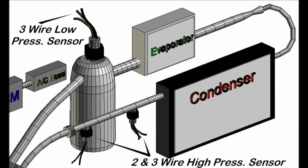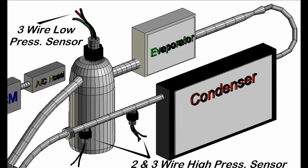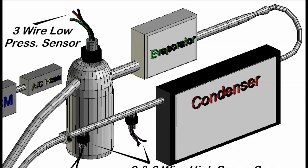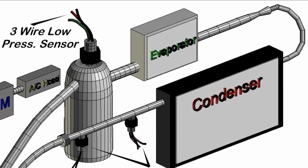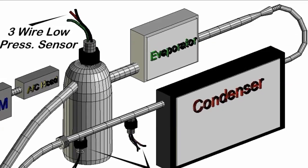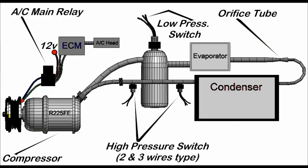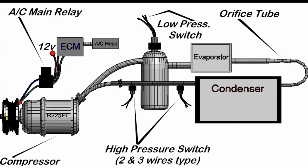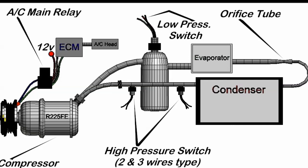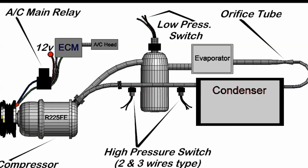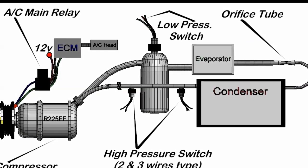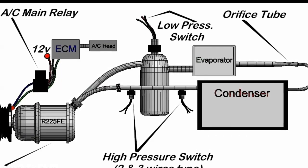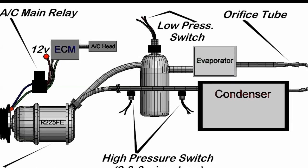On screen again we have the evaporator, the dryer which is the little bottle you see there which is a filter, the high pressure sensor, the low pressure sensor. All these things work in conjunction with the AC head. Understand that the high pressure and low pressure sensors always go to the AC head, the AC computer, not to the ECM. The AC head tells the ECM to turn on the compressor, but the compressor itself is connected to the ECM as we've explained before.